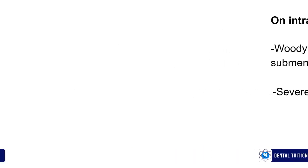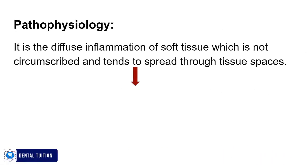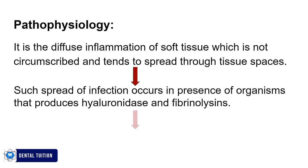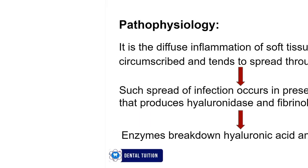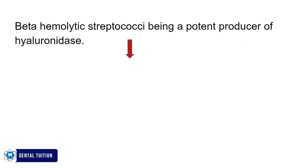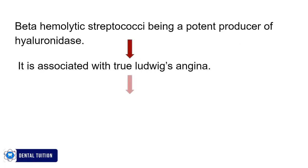Regarding the pathophysiology of Ludwig's Angina — it is a diffuse inflammation of soft tissue which is not circumscribed and tends to spread through tissue spaces. Such spread of infection occurs in the presence of organisms that produce hyaluronidase and fibrinolysins, which are enzymes that break down hyaluronic acid and fibrin. Beta-hemolytic streptococci, being a potent producer of hyaluronidase, breaks down hyaluronic acid and fibrin, leading to diffuse spread of infection to neighboring spaces, and this organism is associated with Ludwig's Angina.